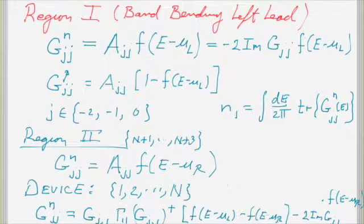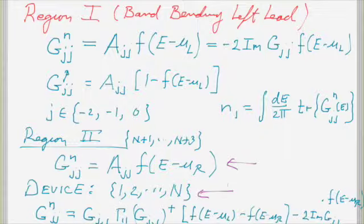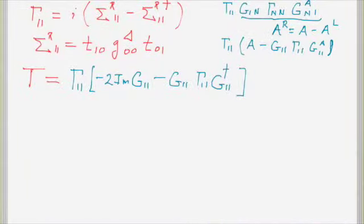You need to calculate the charge in the band-bending regions of the leads — regions 1 and 2 — and also in the non-equilibrium region of the device. In the non-equilibrium region we use the normal equation derived before. In the equilibrium regions of the right and left leads, we use equilibrium expressions: density of states times the Fermi function to get electron or hole density in those band-bending regions. That brings us up to where we were last time, covering through section 4-3 of the notes.